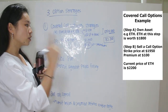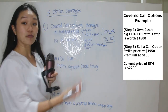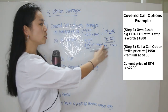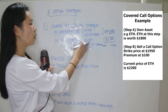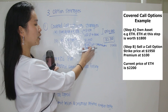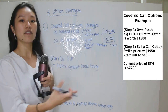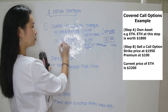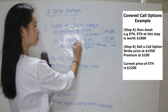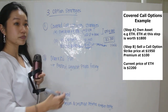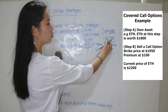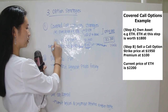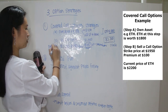How does this strategy help manage risk? Because you receive money upfront, whether ETH goes to $2,200 or drops to $1,000 — it doesn't matter, you have that $100 upfront. If you make any losses, this premium can help cover them. If ETH goes to $2,200 and the option is exercised, your effective loss is the difference between $2,200 and $1,950, partially offset by the $100 premium.